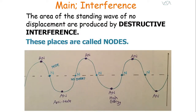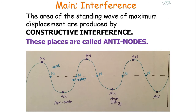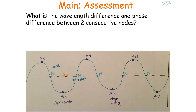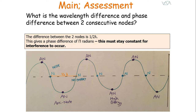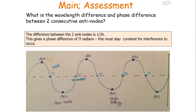An area of a standing wave with no displacement — due to destructive interference, where the reflected and original waves cancel each other out — is called a node. Nodes have no energy, no displacement, and no oscillation. The areas of maximum displacement, either the super peak or the super trough, are called antinodes — formed by constructive interference. Between two consecutive nodes, the distance is half a wavelength, giving a phase difference of π radians, which must stay constant for interference to occur. Similarly, the difference between two antinodes is half a wavelength and gives a phase difference of π radians.